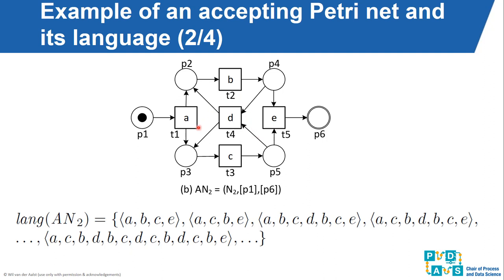Walking through examples: in the first model, we always start by executing A, after which there is a token in P2 and P3. All three transitions are enabled — if D happens we go immediately to E, if B happens the next step is always C followed by E, and if C happens it is followed by B followed by E. So there are three possible executions. In the second model, the arcs connected to D have been reversed, introducing a loop. After doing A, we always do B and C in any order, then we can do E and stop, or do D and go back to the state with tokens in P2 and P3 and repeat. The language includes the shortest executions A, B, C, E or A, C, B, E, plus longer looping executions.